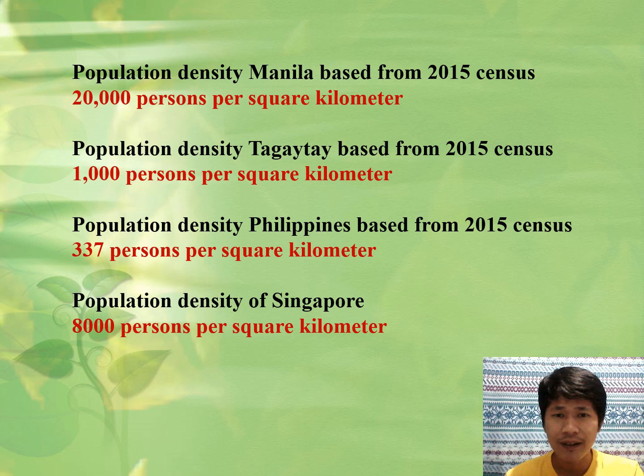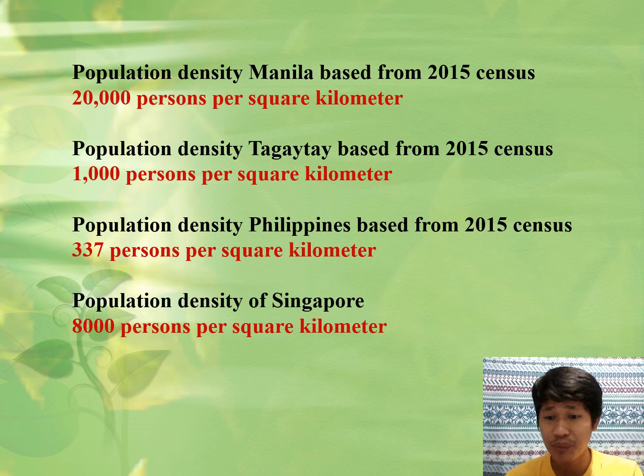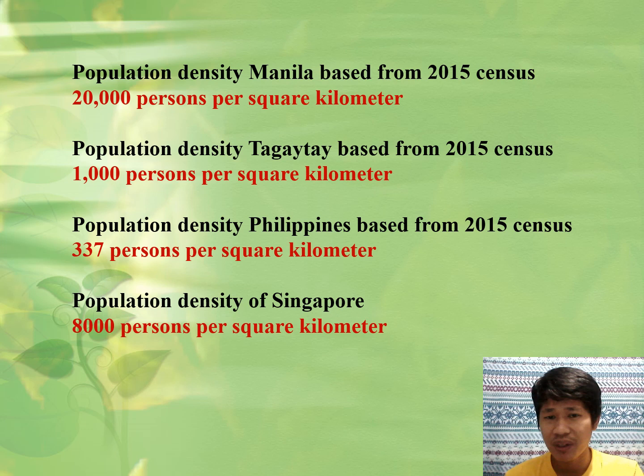Why is Manila at 20,000? Again, it's because of opportunity — all the good jobs are there, so people go there, looking for greener pasture. Tagaytay also has a relatively higher density of 1,000 persons per square kilometer because it is also a developing city.